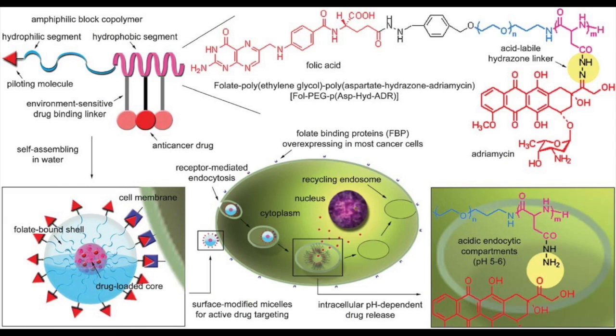Other studies have used doxorubicin, which treats a wide variety of cancers, and added two more targeting features. First, a hydrazone linkage was added between the hydrophobic part of the polymer and the drug. Cancerous cells have a slightly lower pH than healthy cells — around pH 6 — so the hydrazone linkage breaks within cancerous cells but not healthy ones, releasing the drug mainly into cancerous cells. Second, folic acid was added to the outside of the micelle. Also known as vitamin B9, folic acid works because cancerous cells over-express folic acid receptors, allowing the drug more easily into cancerous cells than healthy ones. Studies showed much higher drug uptake in cancerous cells and much lower toxicity in in vitro trials.